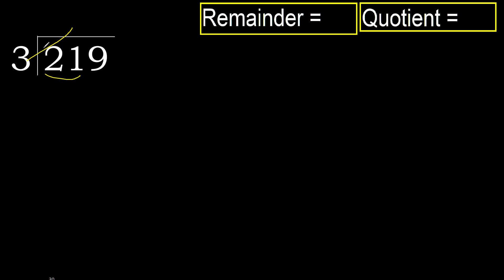3 multiplied by 8 is 24. 24 is greater. Multiply by 7: 21 is not greater. Subtract.